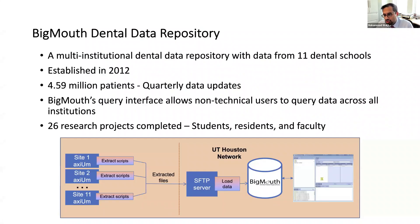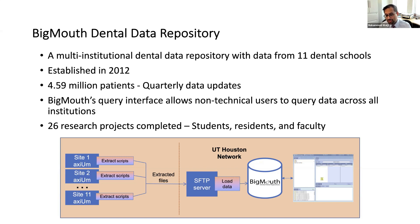Big Mouth is a multi-institutional centralized data repository. Different academic dental institutions contribute their electronic health record data to a central location, currently at UT Health. It was established back in 2012 with four institutions, where we had about a million patients. We've grown it to just over four and a half million patients right now. Data is refreshed every quarter. One of the main things we did when we started Big Mouth was to have a platform where users can quickly query the data. Academic institutions that contribute have started to use the repository for many types of projects.